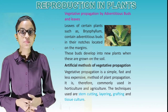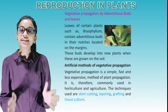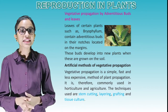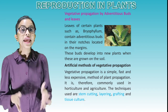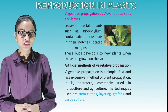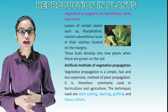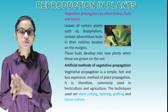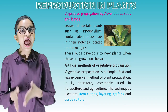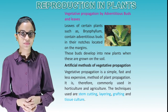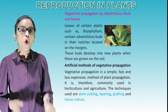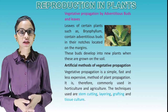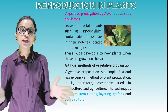Vegetative propagation by adventitious buds and leaves: Leaves of certain plants such as bryophyllum contain adventitious buds in notches located on their margins. These buds develop into new plants when grown in soil. Artificial methods of vegetative propagation are simple, fast and less expensive. They are commonly used in horticulture and agriculture. The techniques used are stem cutting, layering, grafting and tissue culture.